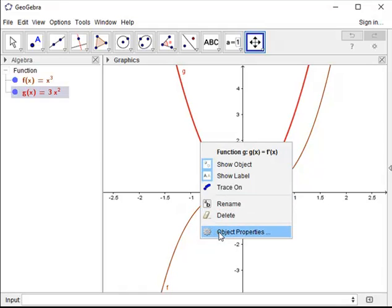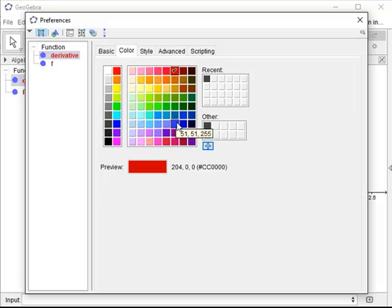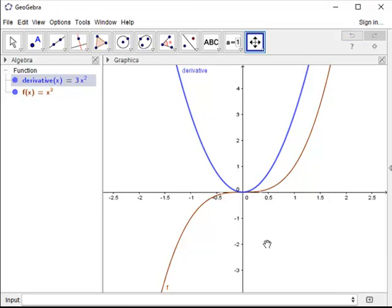Now if I want, I can go into the object properties on f prime. I can rename it derivative or first derivative. Maybe I want to change the colors to make it a little bit more obvious. And there's my first derivative.